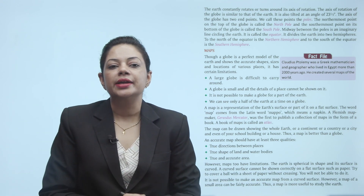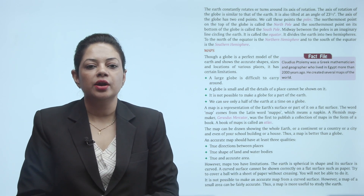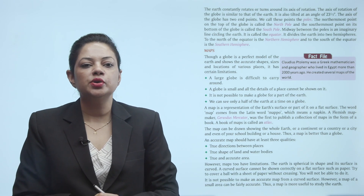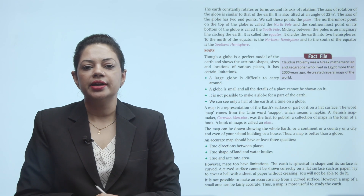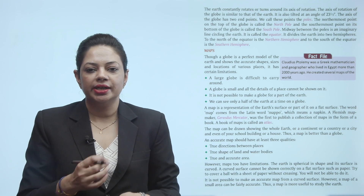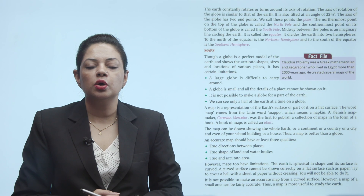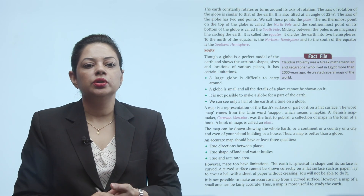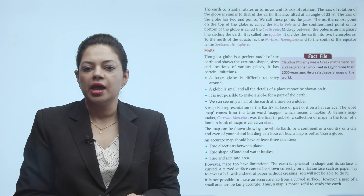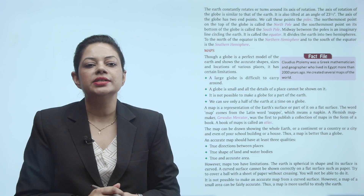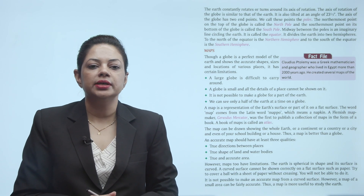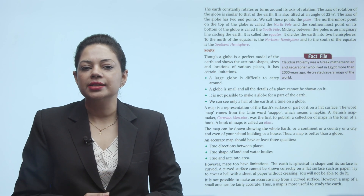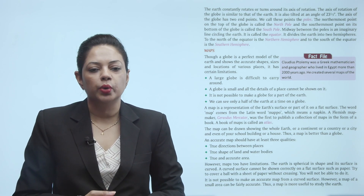The Earth constantly rotates or turns around its axis of rotation. The axis of rotation of the globe is similar to that of the Earth — it is also tilted at an angle of 23 and a half degrees. The axis of the globe has two endpoints called the poles. The northernmost point on top of the globe is called the North Pole and the southernmost point at its bottom is called the South Pole. Midway between the poles is an imaginary line that circles the Earth, called the equator.